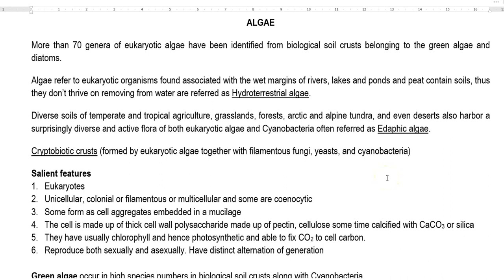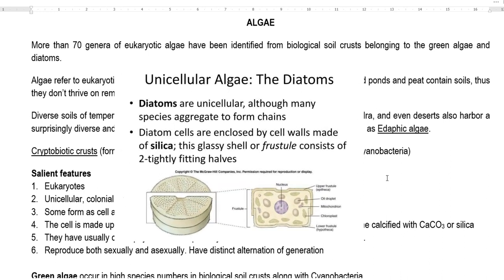Some algae form cell aggregates and they are embedded in mucilaginous layers. In some groups of algae, the cell wall is made up of a thick polysaccharide layer which mainly consists of pectin and cellulose. Sometimes they are even calcified, meaning calcium carbonate is added, and sometimes silicified, meaning silica is added.